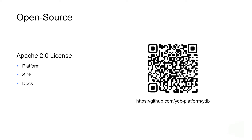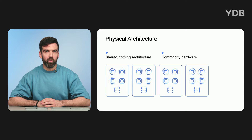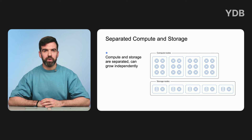The entire source code of the platform, SDKs, and documentation is available under the Apache 2.0 license. YDB runs on commodity hardware with a shared nothing architecture. Nodes are typically connected via an Ethernet network in a local data center setup, and standard optic fibers via a cross data center setup. Compute and storage layers are separated, allowing each of them to grow independently.